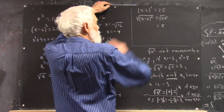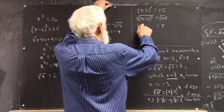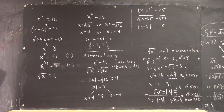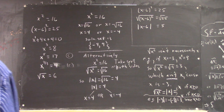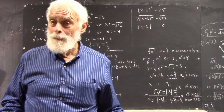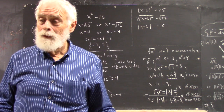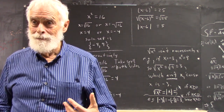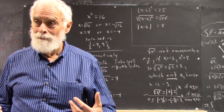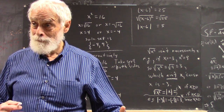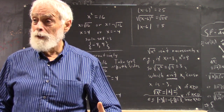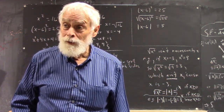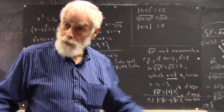If the absolute value of something is 5, what numbers could give you an absolute value of 5? Either 5 or negative 5. If the absolute value of something is 5, that something could be 5 — because the absolute value of 5 is 5 — but it could also be negative 5, because the absolute value of negative 5 is 5.